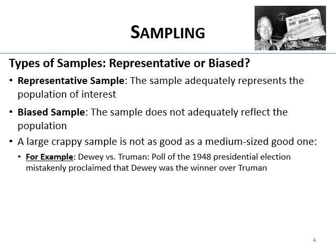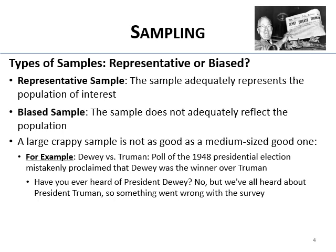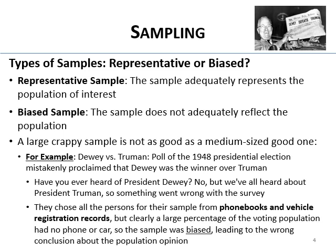For example, in the Dewey versus Truman poll of the 1948 presidential election, a newspaper mistakenly proclaimed Dewey as the winner over Truman. You've never heard of a President Dewey, but there was definitely a President Truman, so something went wrong. They chose persons for their sample from phone books and vehicle registration records, but back then a large proportion of the population had no phone or car, so the sample was biased towards people with higher income, leading to the wrong conclusion about popular opinion.